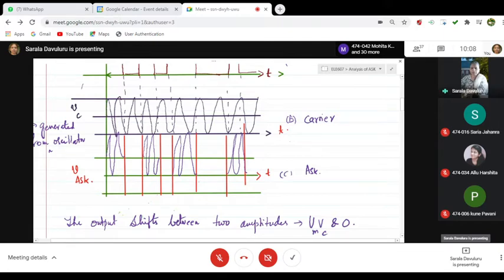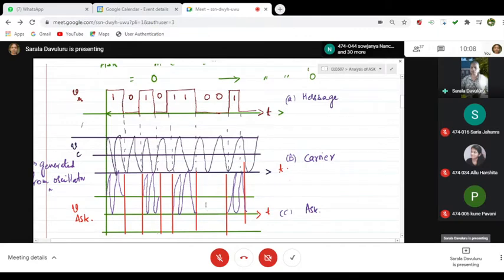Once again when it is at this point which is 0, absence of the signal when it is 1 it is presence of the signal. This is how you represent your amplitude shifting.